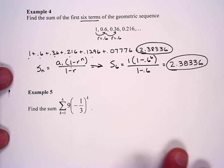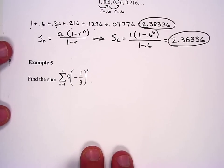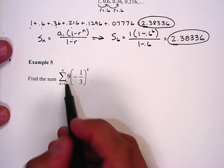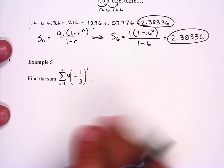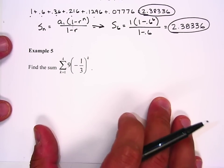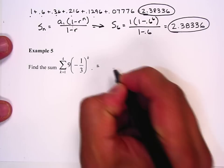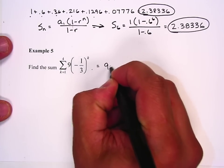Down here we have sigma notation for example five. It says find the sum of 9 times (-1/3)^k from k=1 to 4. What we're going to do is we're just going to go through and plug those in.